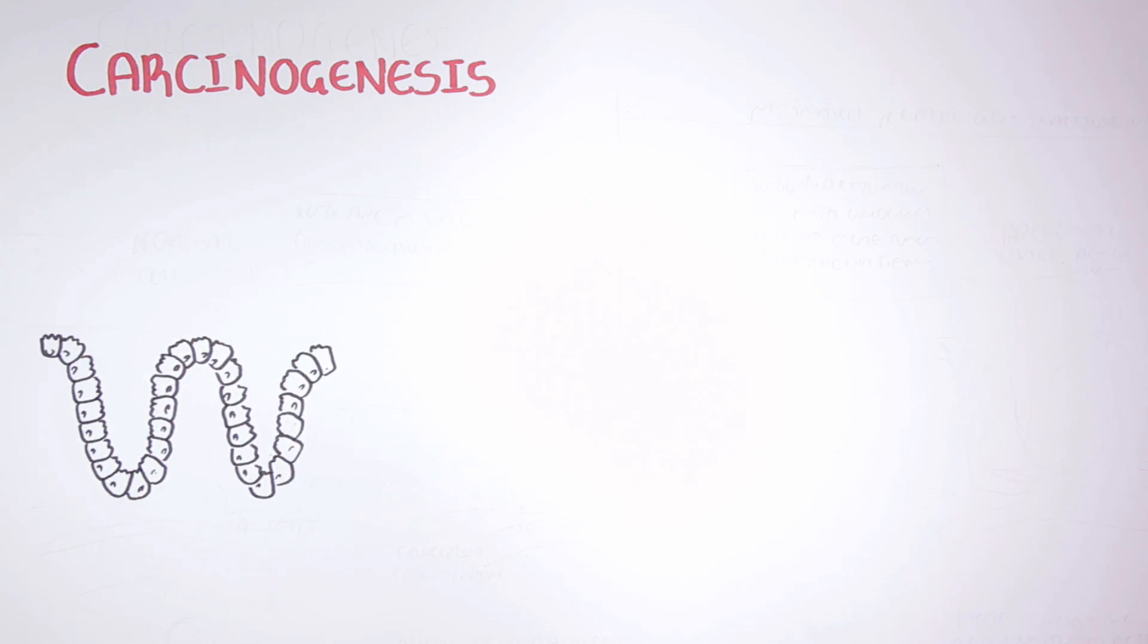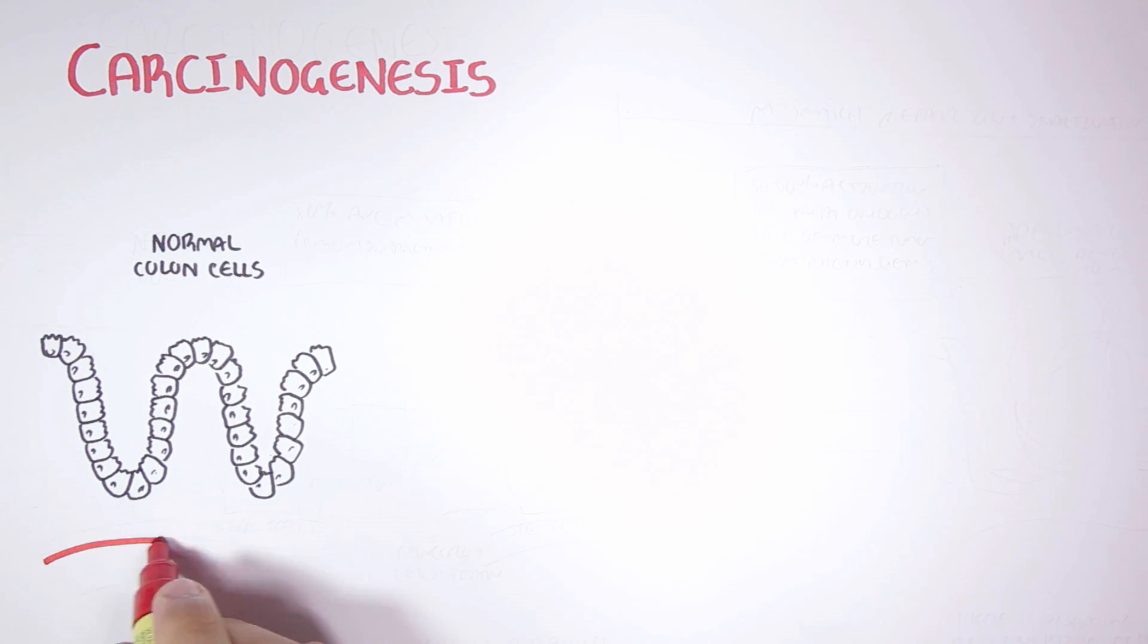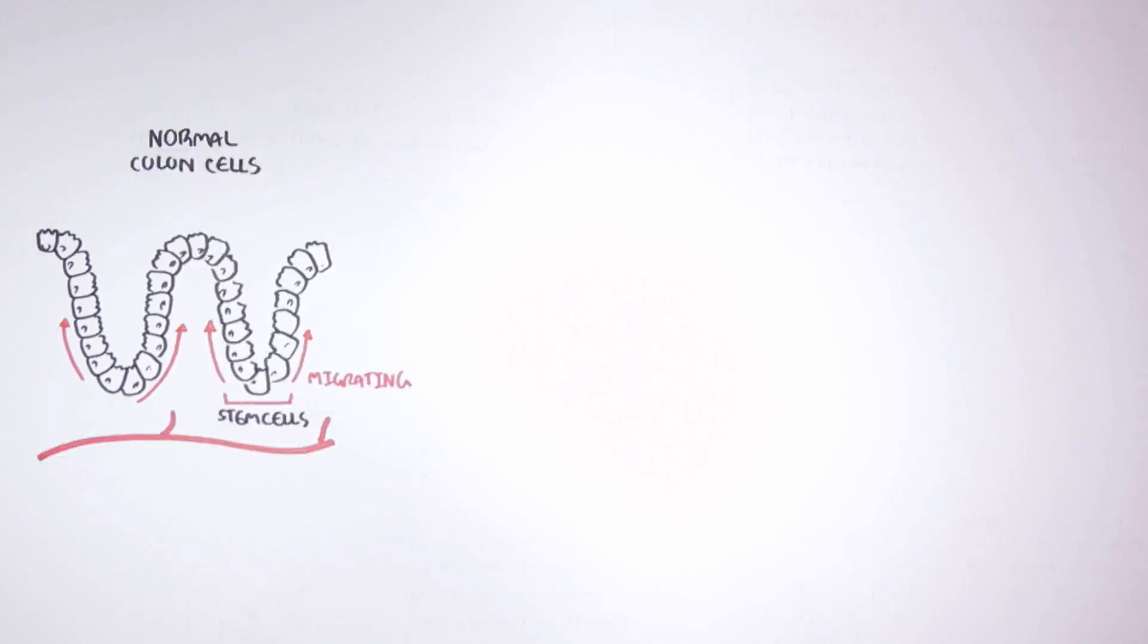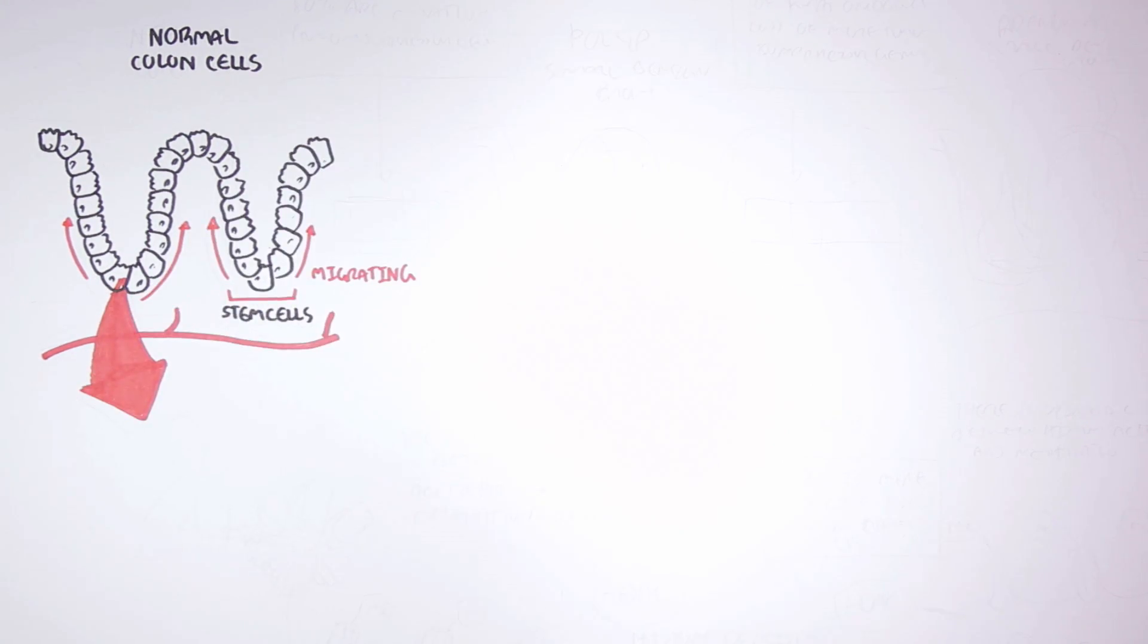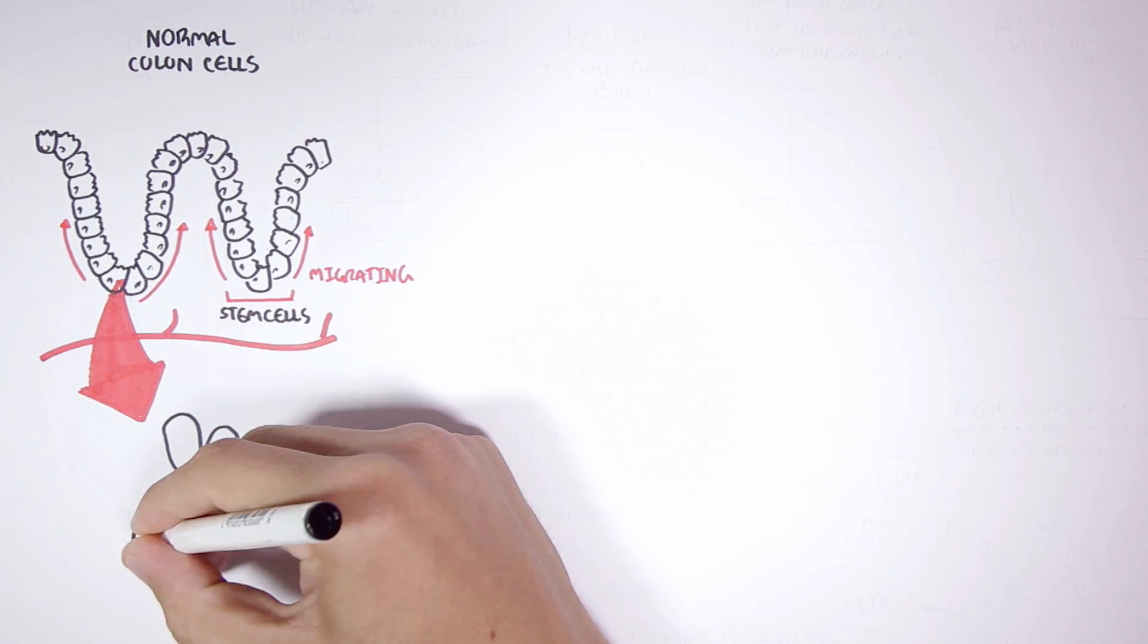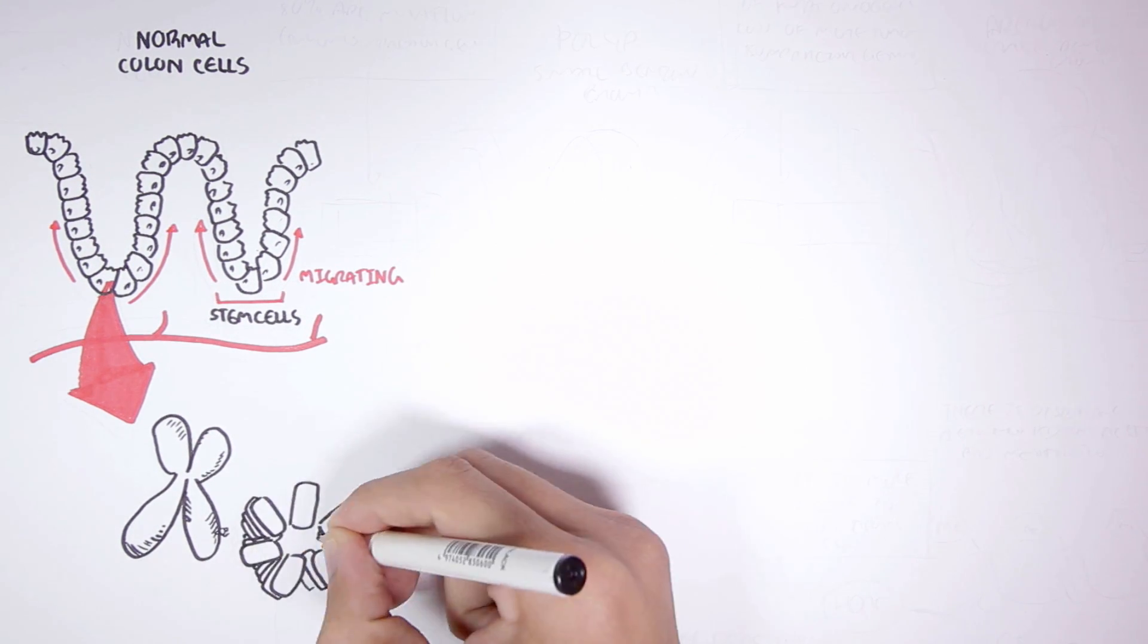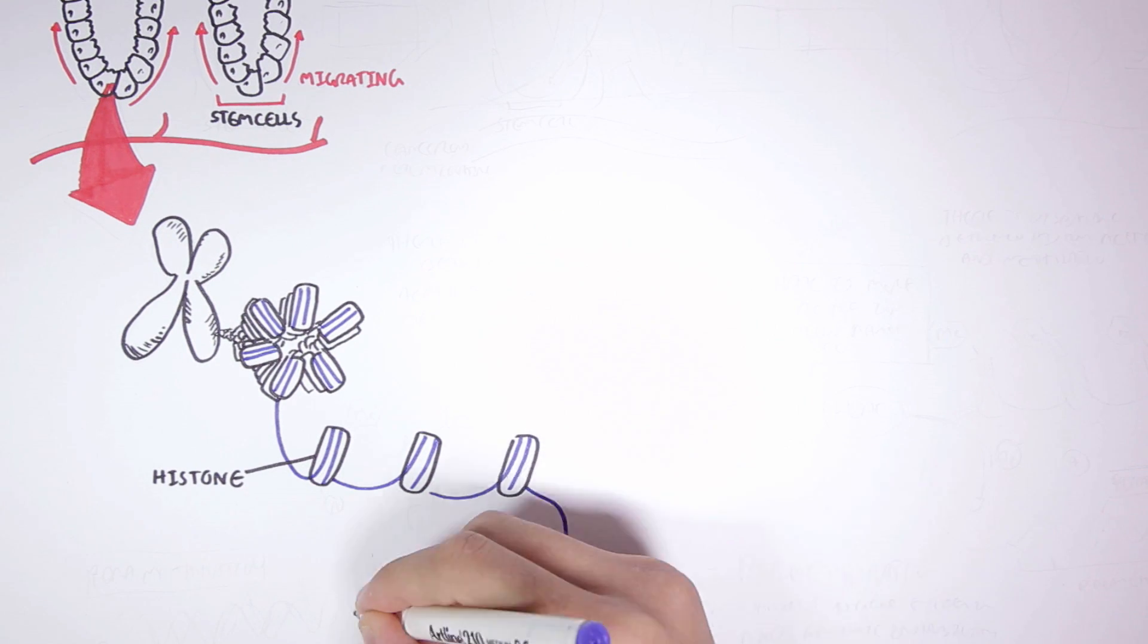We begin by looking at normal colon cells that have their blood supply. Here where the crypts are, stem cells migrate up giving rise to new colon cells. If we look into the genetic material of one of these stem cells, their genetic material is DNA which is found in chromosomes. The DNA is all tangled up around histones. If we remove the histones here we can see the DNA.